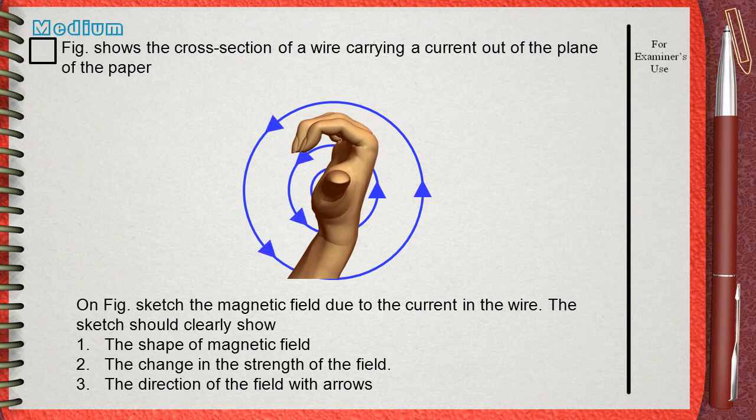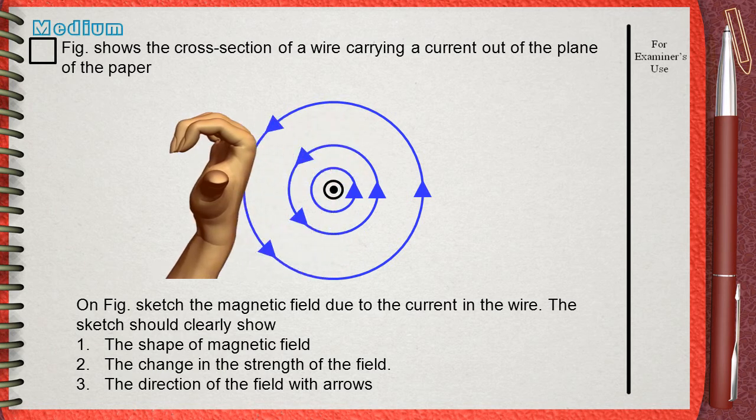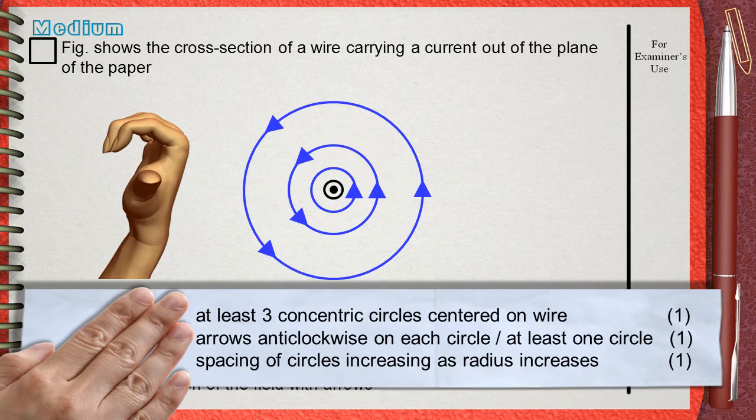The three marks given by the mark scheme are for at least three concentric circles centered on the wire. And this is how we drew our circles. They all have the same center.